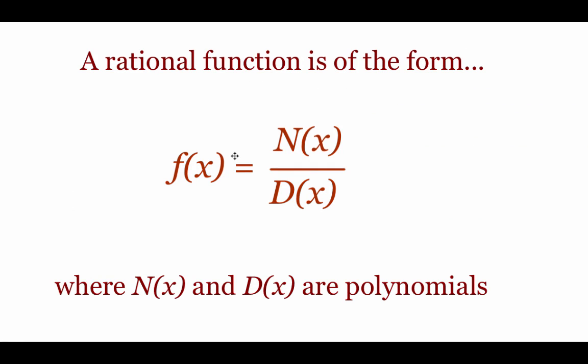A rational function is defined as a function f of x being equal to n of x over d of x, and both n and d are going to be polynomial functions themselves — so any combination of polynomial functions we've been dealing with so far. They could be linear, quadratic, cubic — really anything is possible as long as it fits into that polynomial category.